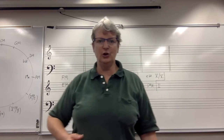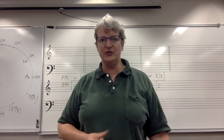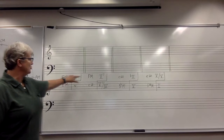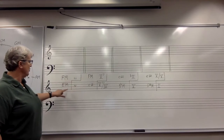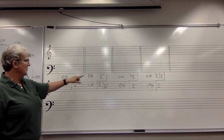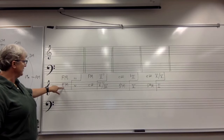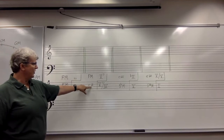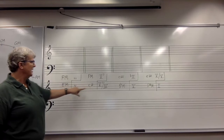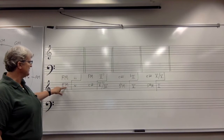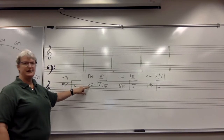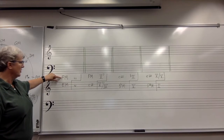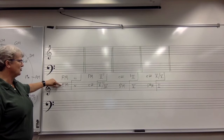Let's take a look at the sample modulations I've written up on the board. I've taken the key of F major, and I've shown a possible pivot chord to take us to either the key of E major or the key of C minor. You can verify for yourself that these keys are distantly related to F major. F major has one flat in the key signature, and E major has four sharps.